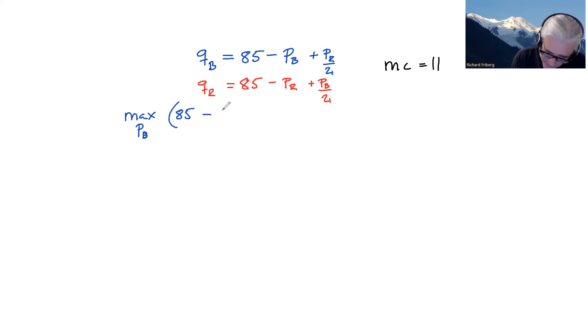So 85 minus PB plus PR divided by two times PB. So that gives revenue. We need to deduct the cost as well. So that's this whole thing times 11. So we're writing that like this to have it compact.